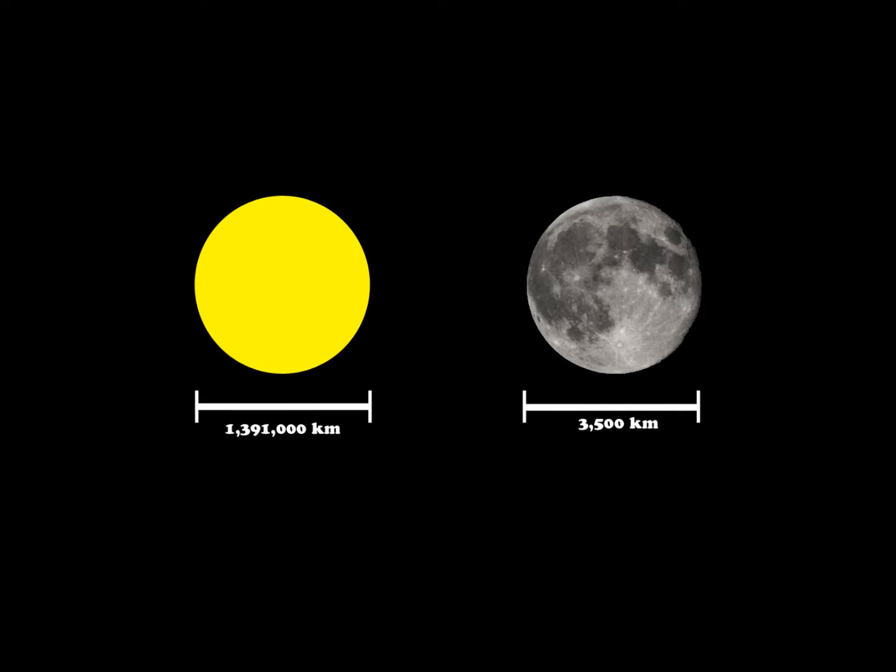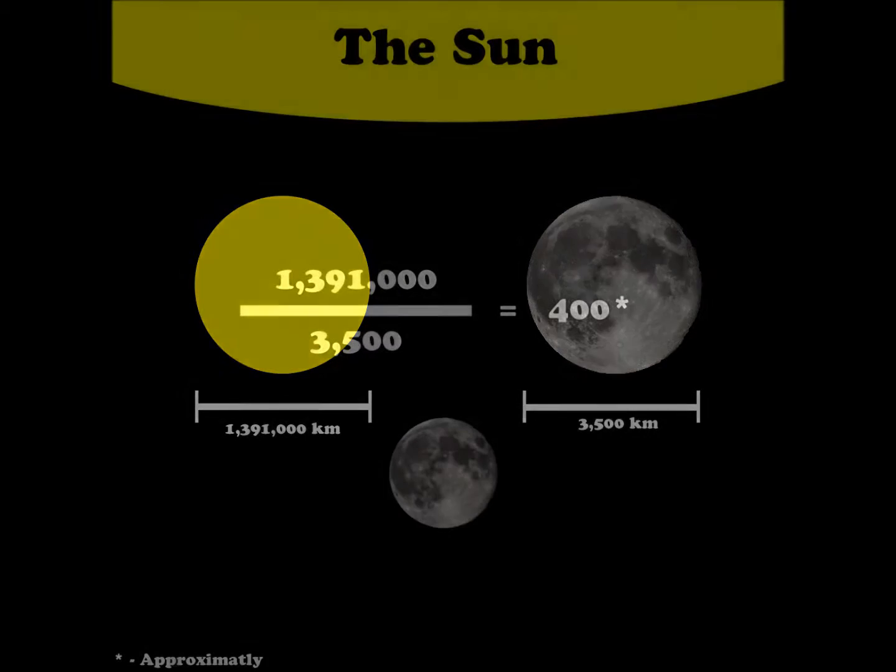Next, we need to know the diameters of both the Moon and the Sun. The Sun's diameter is approximately 1,391,000 km, and the Moon's diameter is approximately 3,500 km. This is just one side of what we can see of both the Moon and the Sun.